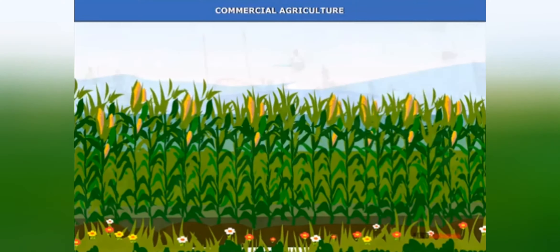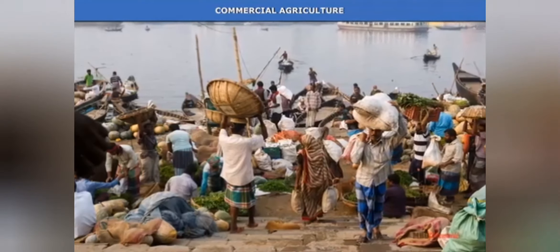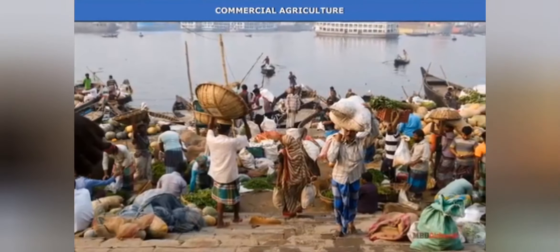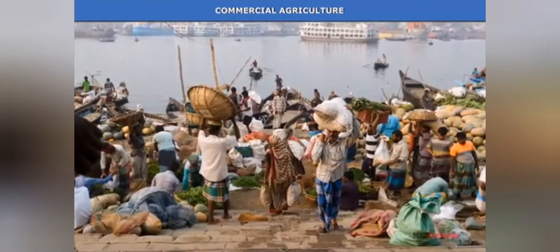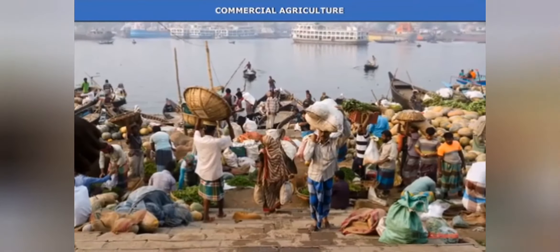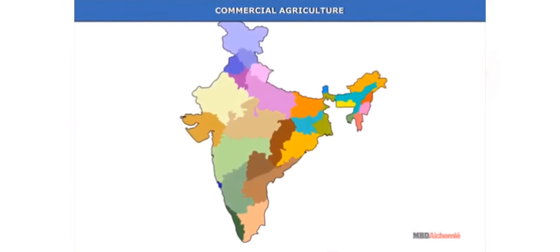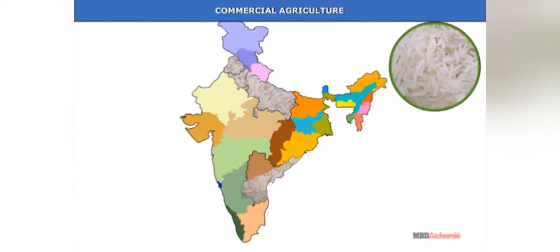The next topic is commercial agriculture. In commercial agriculture, farming is done to earn more money. Some important commercial agricultural products are non-food crops like jute and cotton.